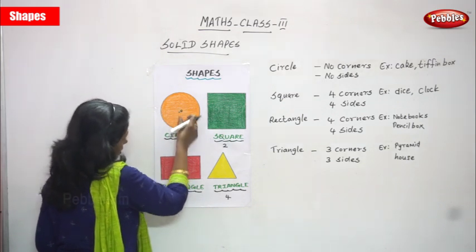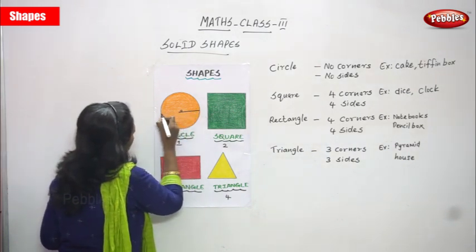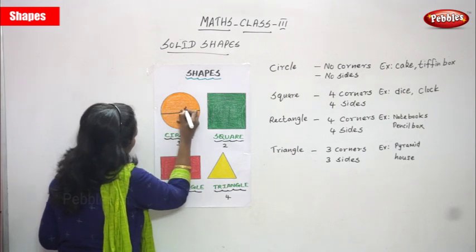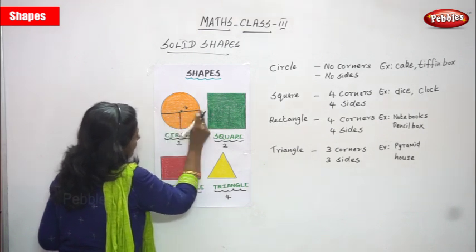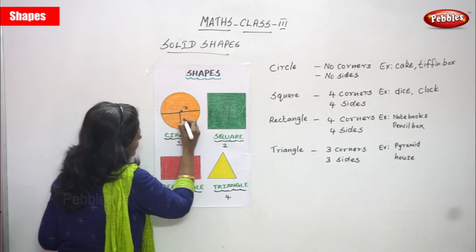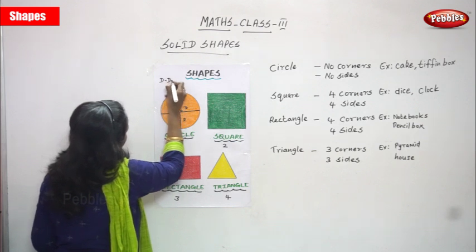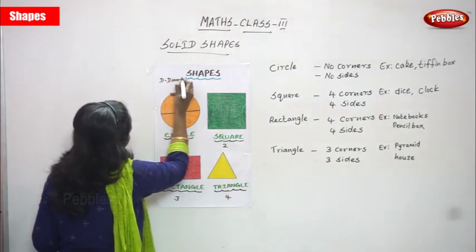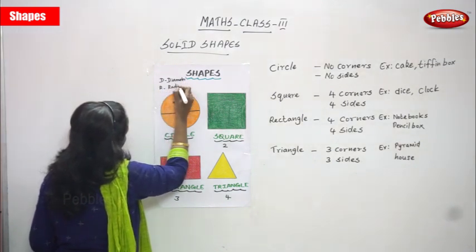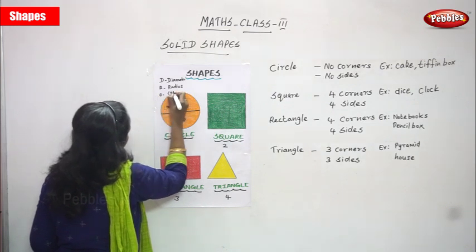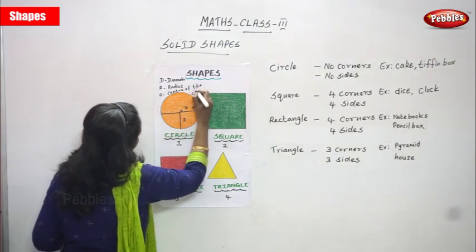From the diameter, we cut into equal half — that is called the radius. So D means diameter, R means radius, and O means center of the circle.